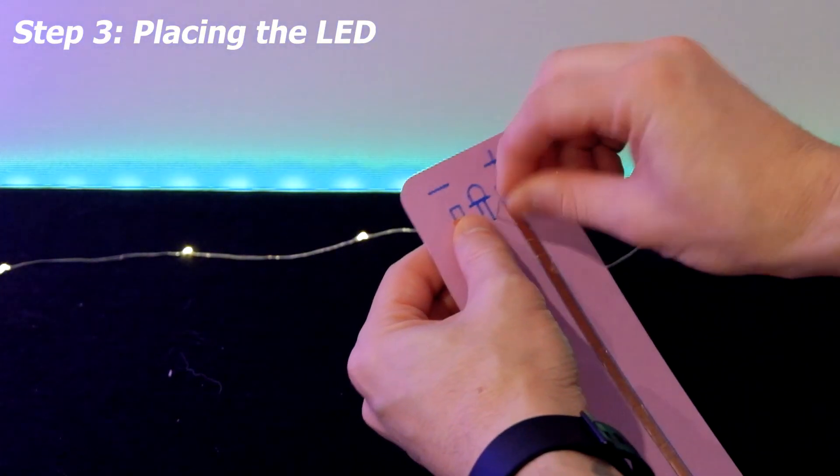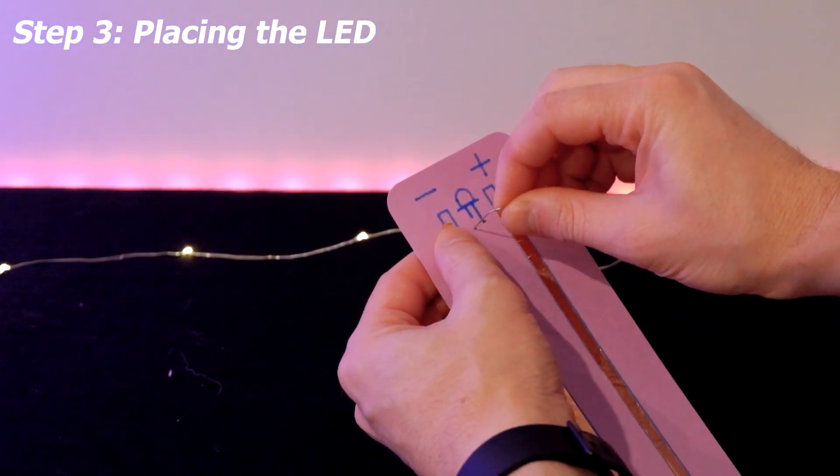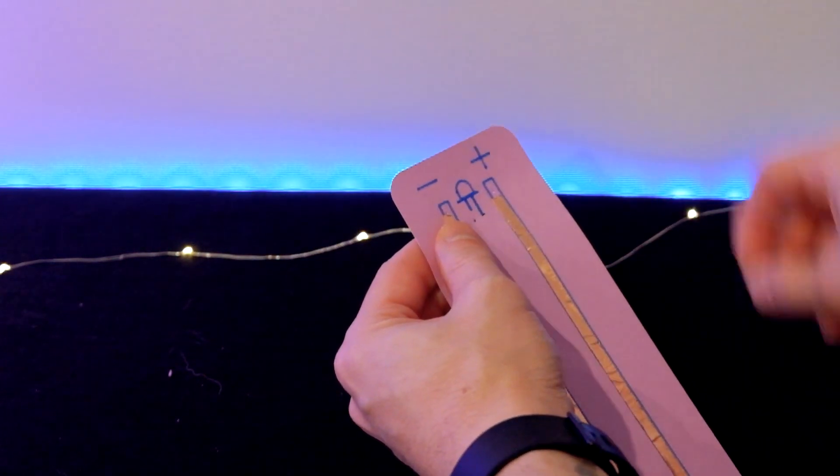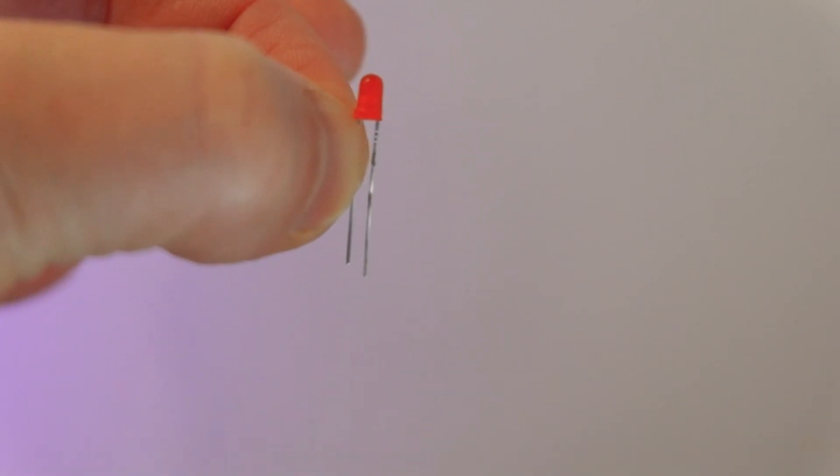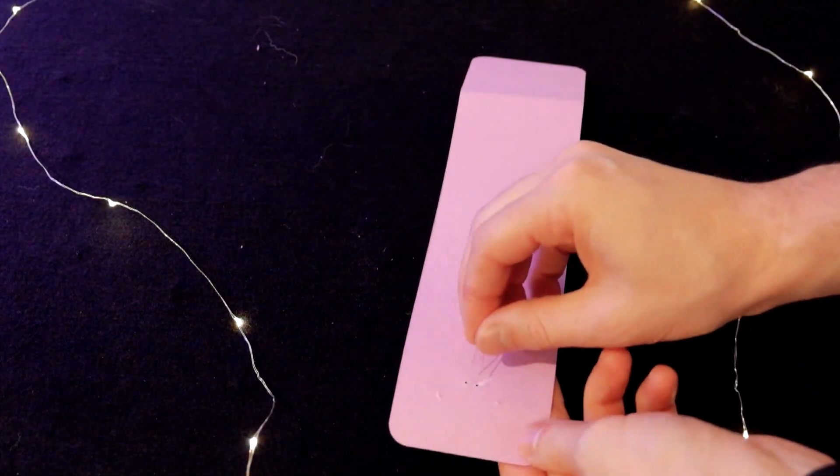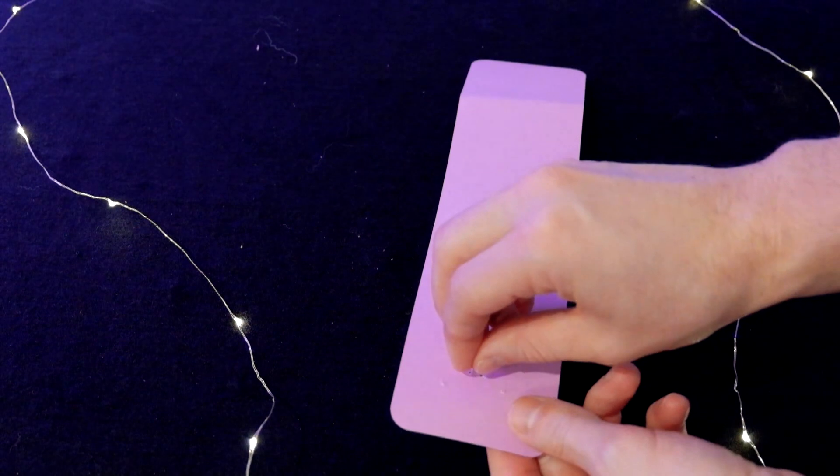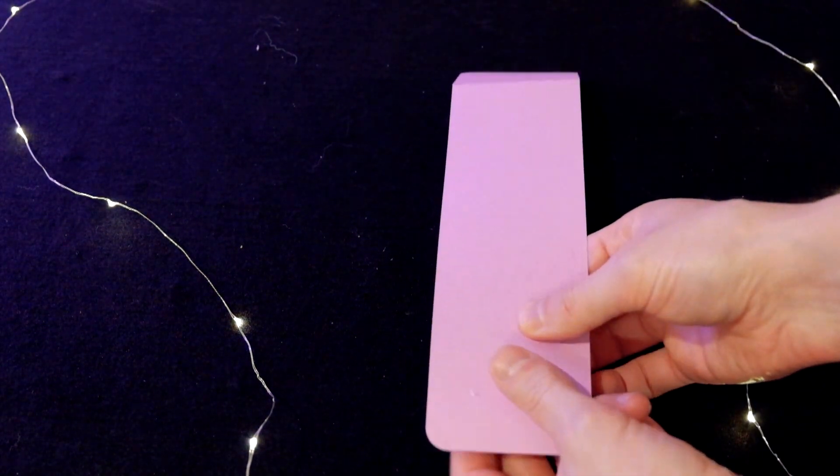We're going to put our LED light on the other side of the bookmark. Use a paper clip to poke two holes on the drawn LED legs. The LED has two legs. The longer leg is the positive and the shorter leg is the negative. Poke the longer leg through the side with a plus and the shorter leg through the side with a minus.